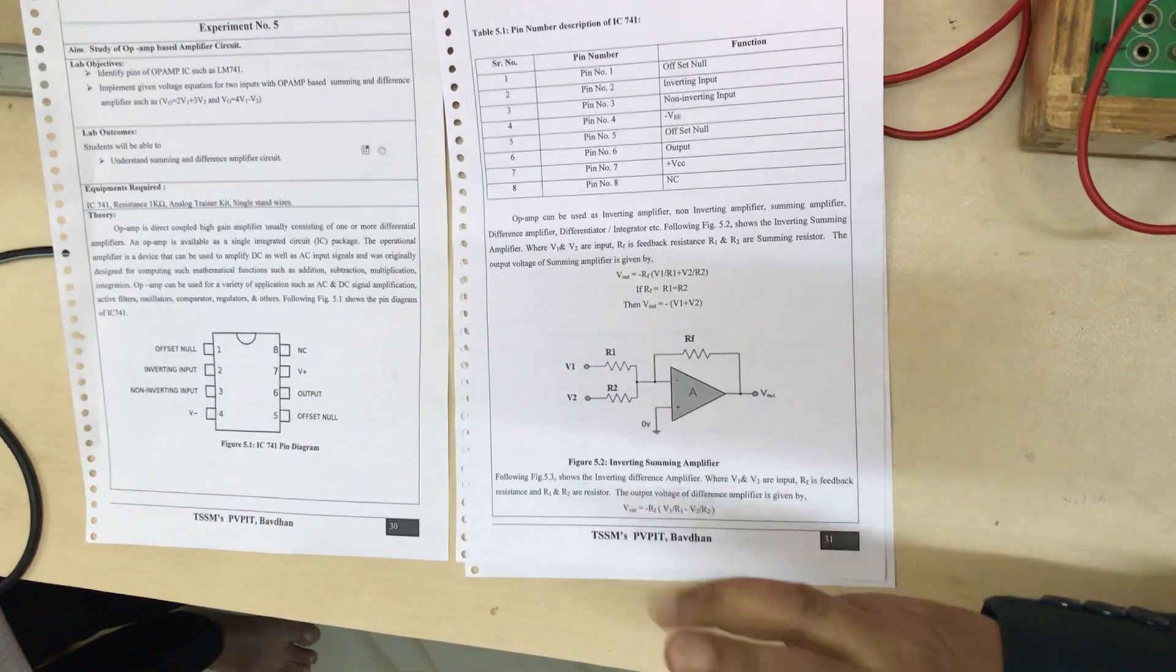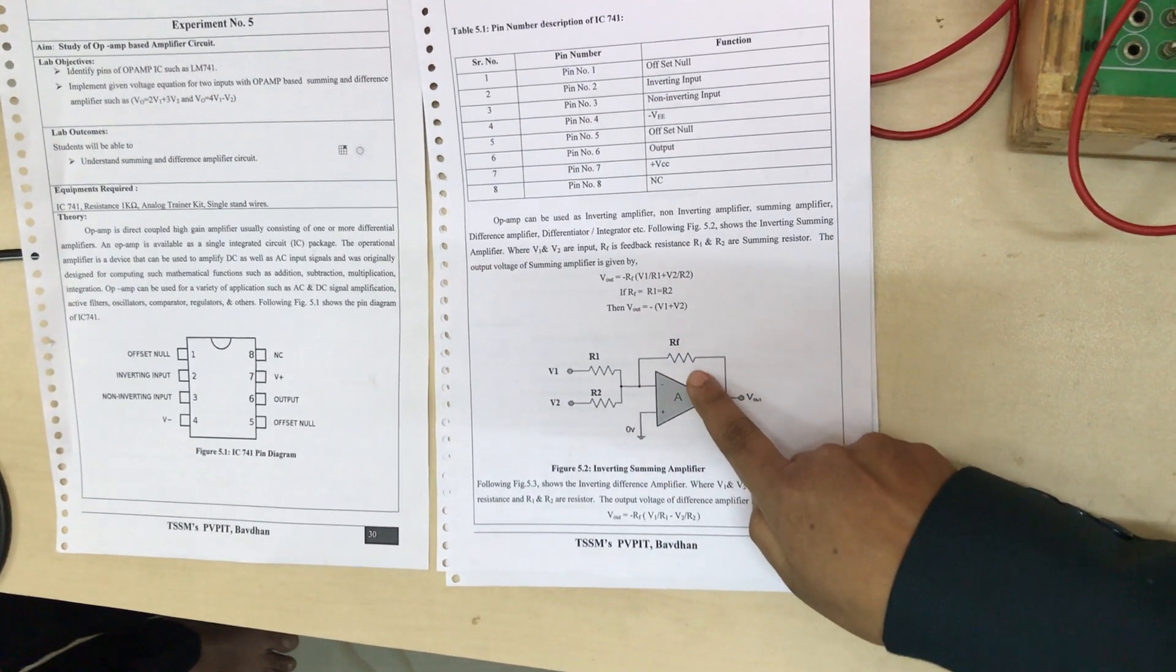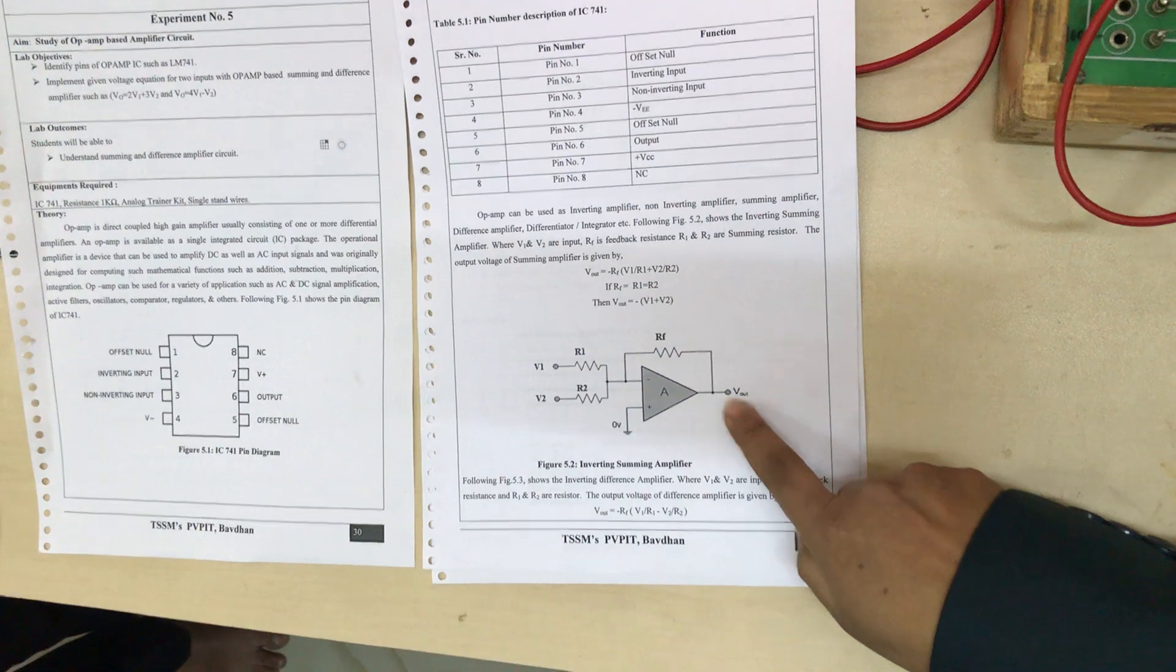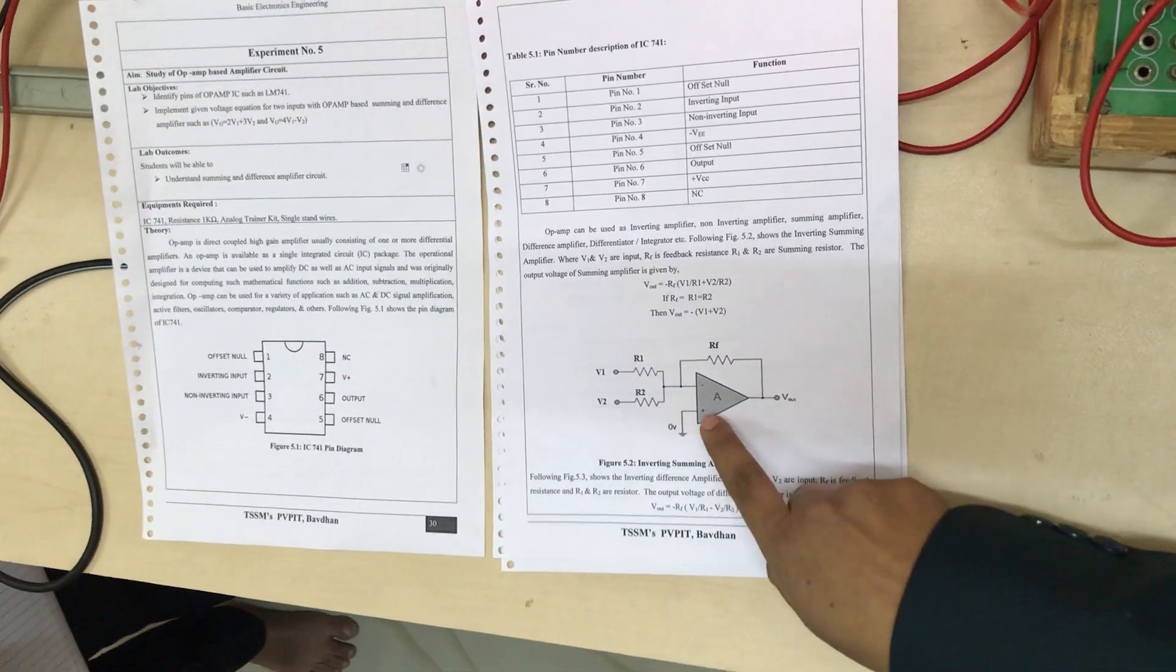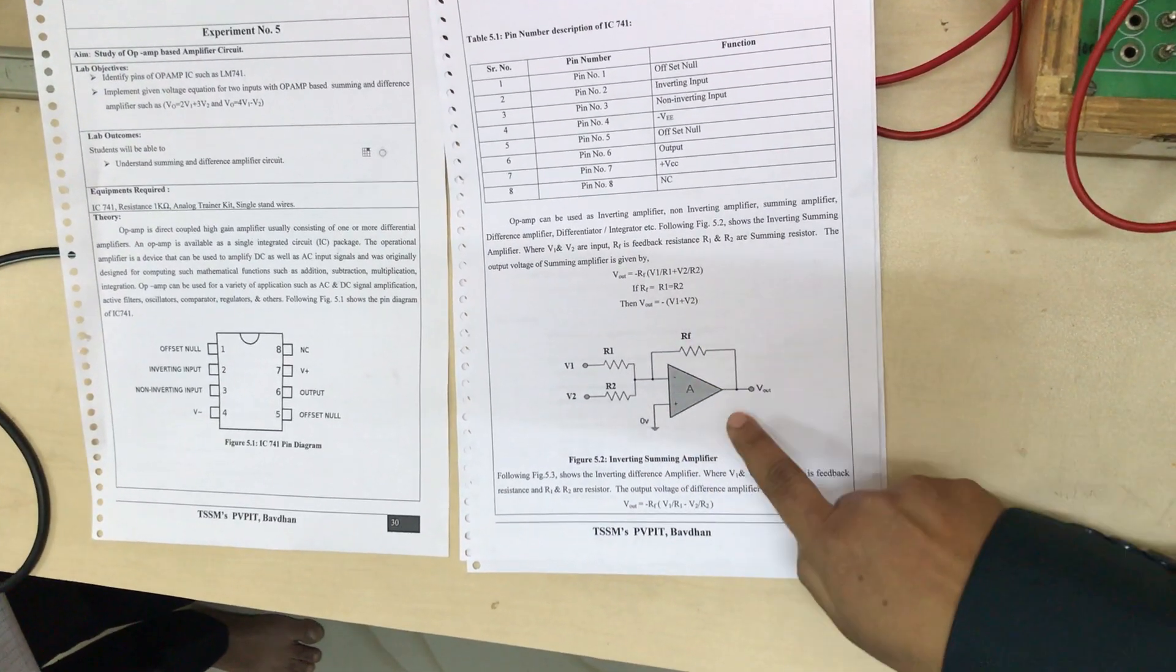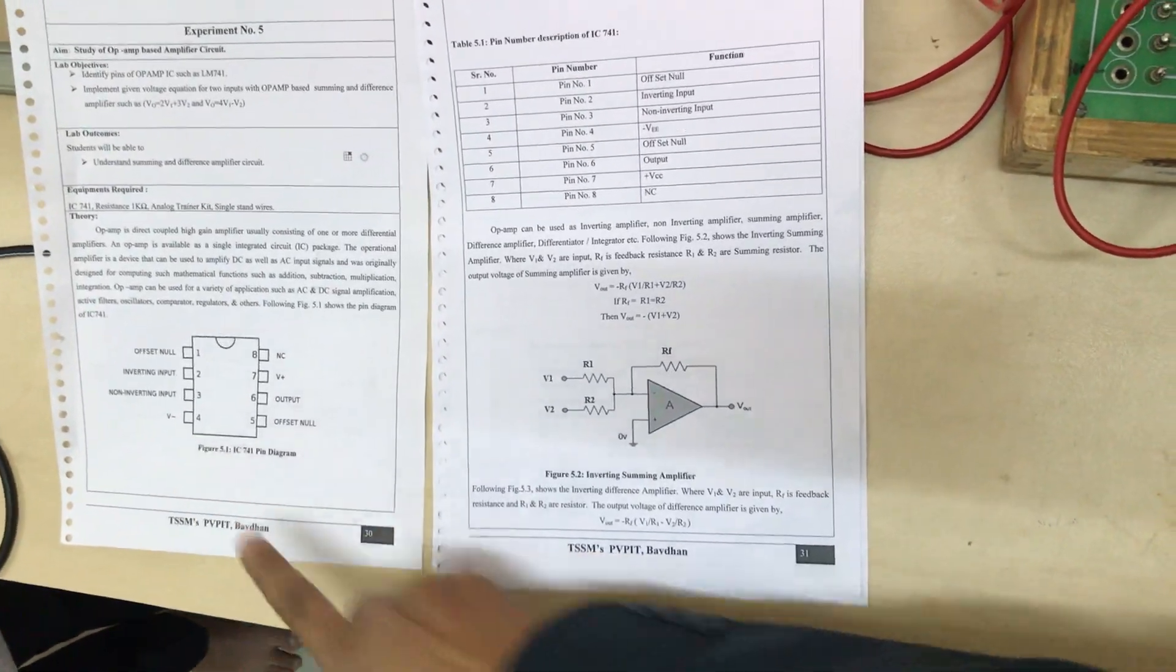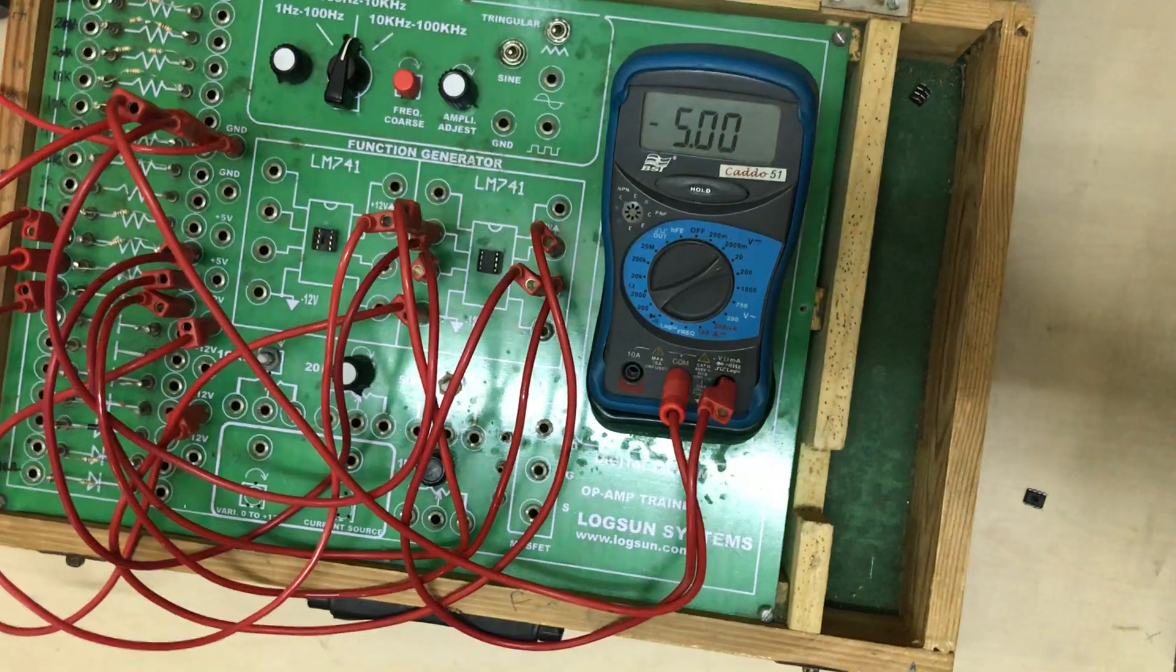Pin number 2 totally 3 wires are there: 2 for R1, R2 and another one is for RF. RF is connected to pin number 6 that is output, and pin number positive, that is non-inverting terminal pin number 3, it is connected to ground. Along with these we want supply pins, that is pin number 7 and pin number 4 for plus or minus 12 volts for IC number 741.